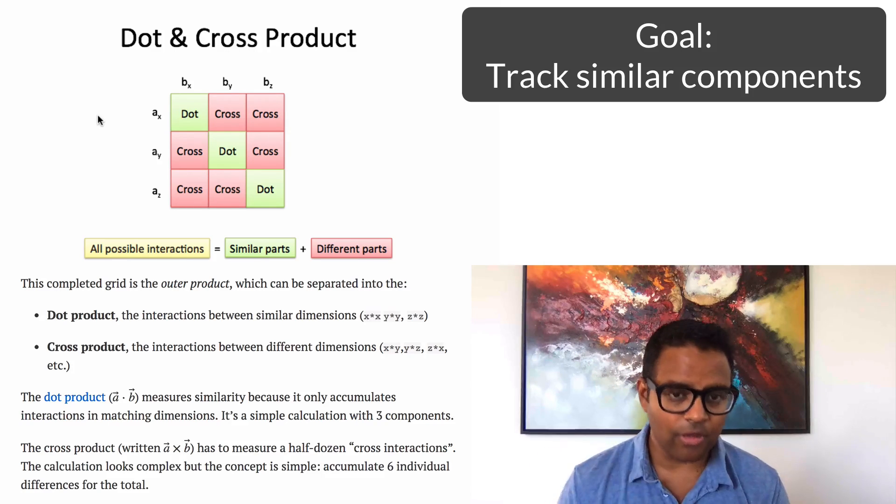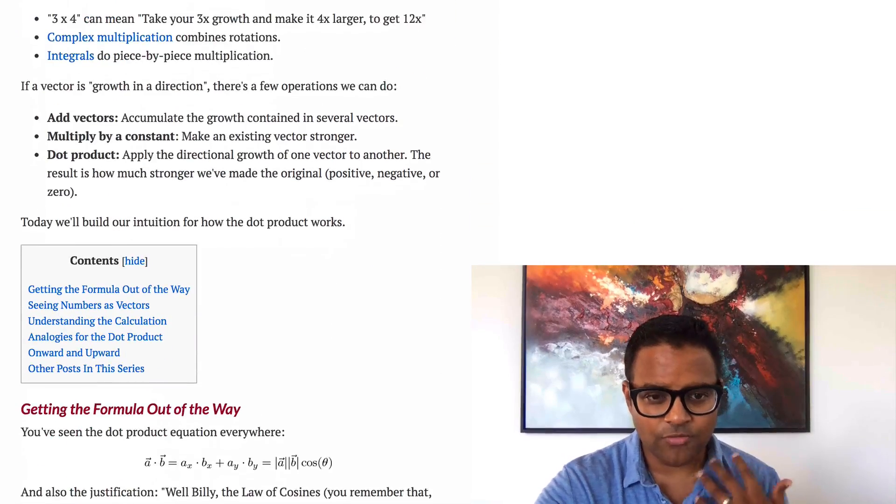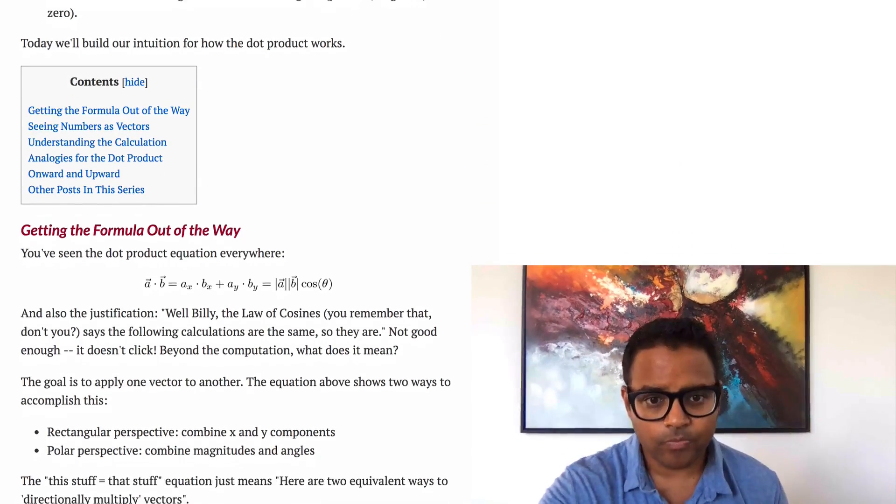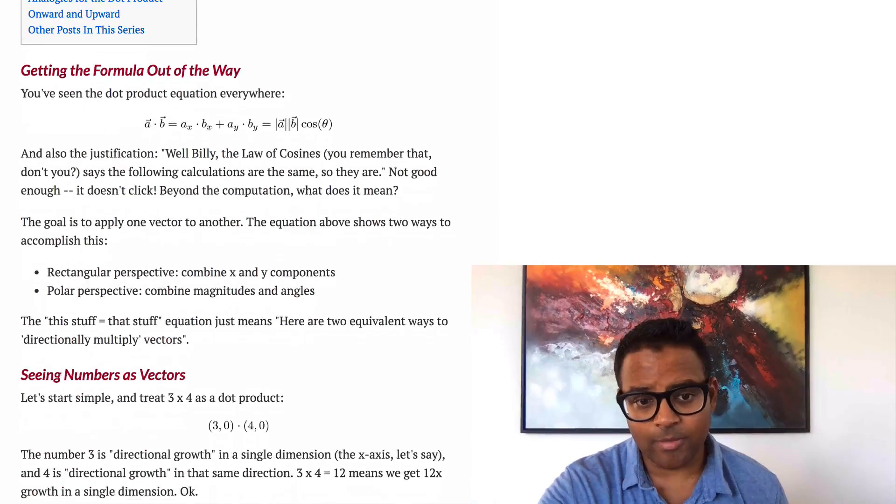The cross product is something else and we'll talk about that separately. So with that in mind, let's take a look. We have this notion of directional multiplication, tracking things in the same direction. This is the definition and let's see how we can really think about it.